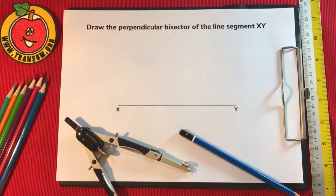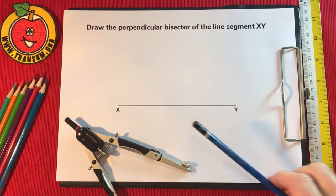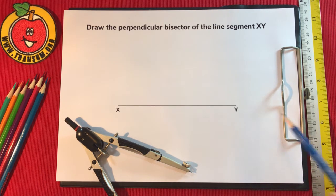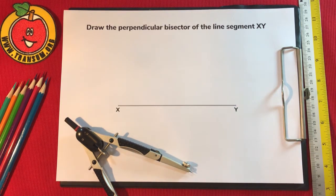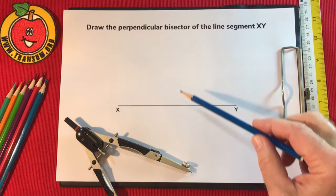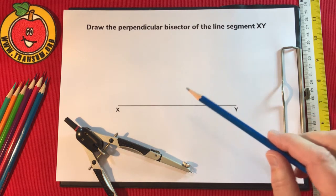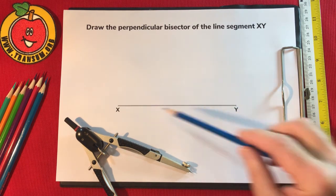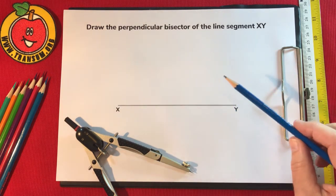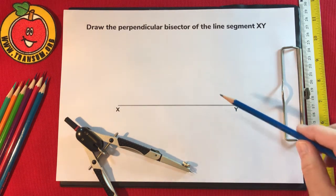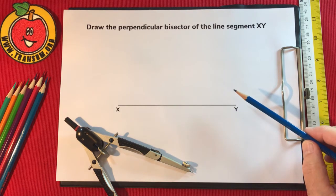This video shows you how to draw the perpendicular bisector of a line segment. What does this mean? Perpendicular means the line that you draw has to be at right angles to this line XY here. Bisector means it has to cut it in half, into two equal pieces.